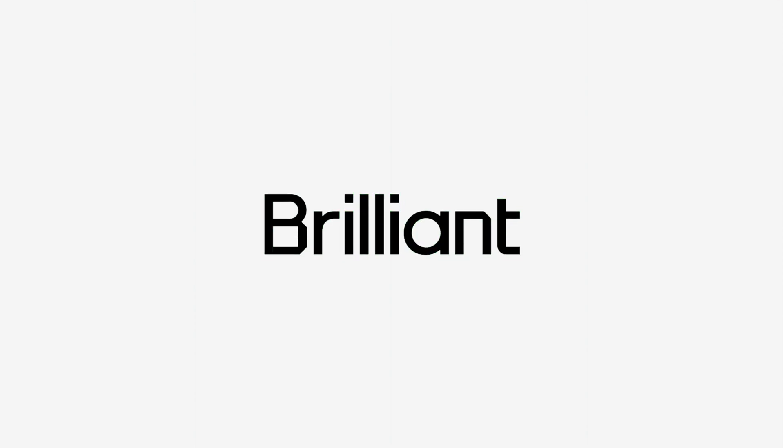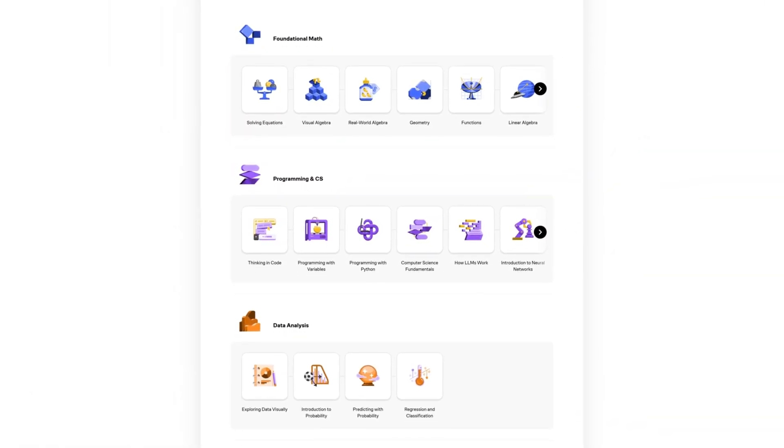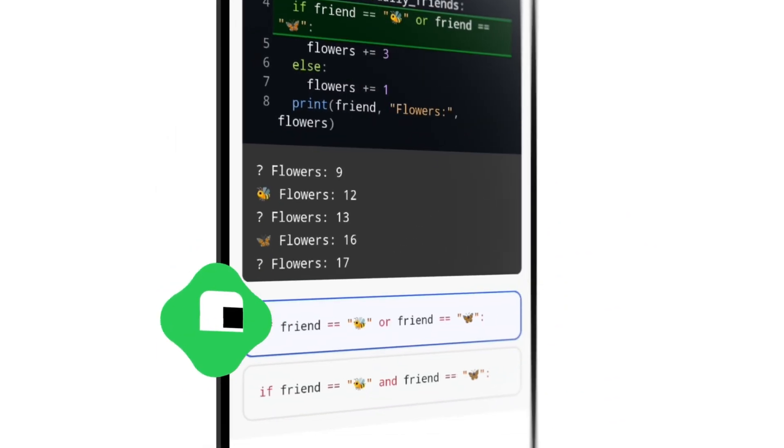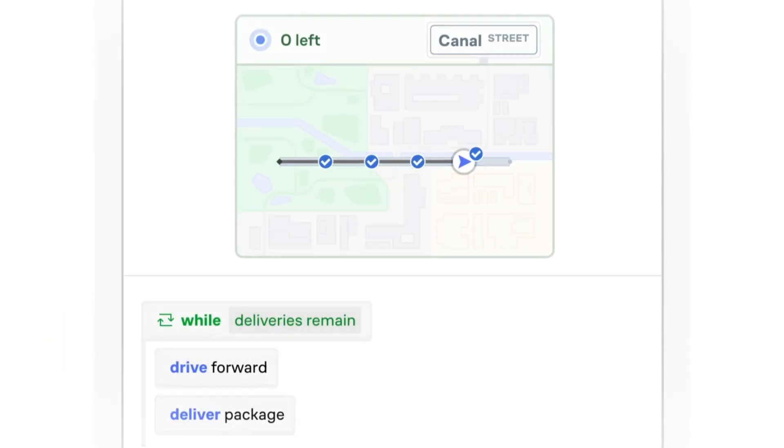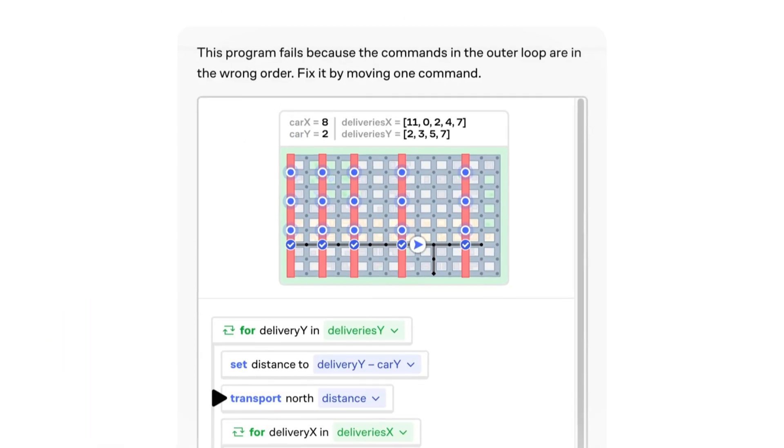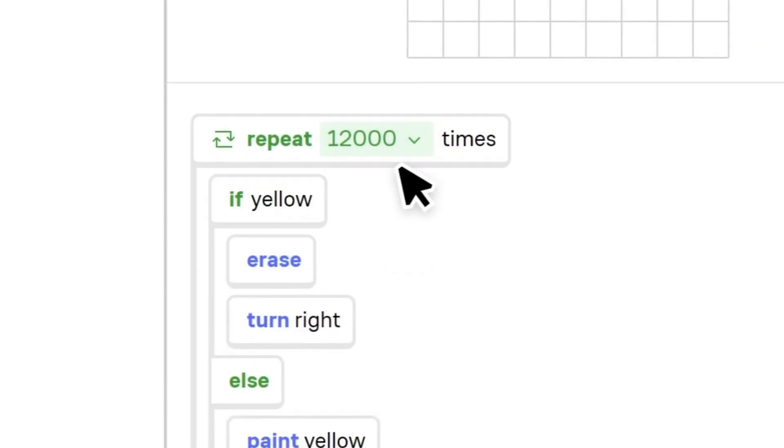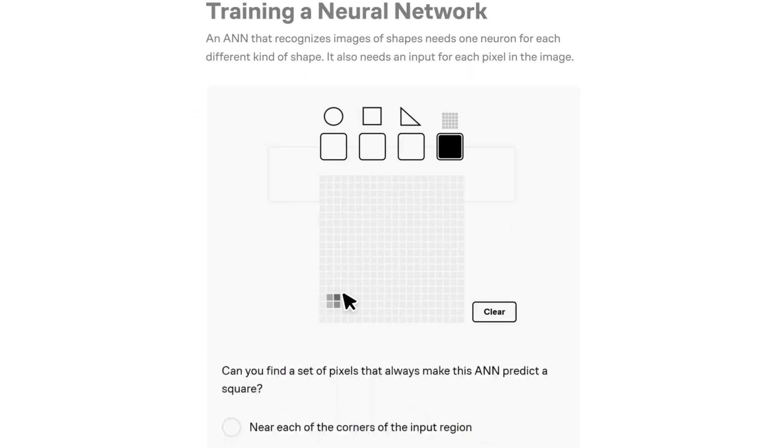Brilliant.org helps you get smarter every day with thousands of interactive hands-on lessons in math, science, programming, data analysis, and artificial intelligence. Each lesson like these ones right here about computer science and programming is crafted with award-winning teachers, researchers, and professionals so that you can learn new concepts in a hands-on manner that maximizes your retention and builds your problem-solving skills.